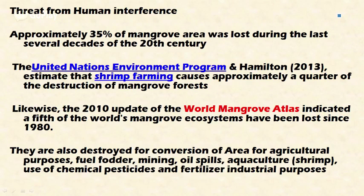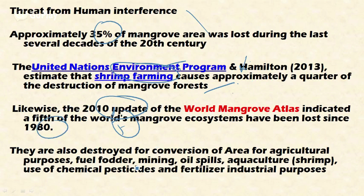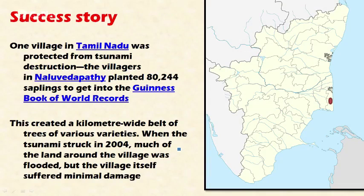Despite these important functions, mangroves have been under threat from human interference. Approximately 35 percent of the mangrove area was lost during the last several decades of the 20th century. A recent UNEP report estimates that shrimp farming — artificial shrimp farming — causes approximately 25 percent destruction of the mangrove ecosystem. The 2010 update of the World Mangrove Atlas indicates that one-fifth of the world's mangrove ecosystem has been lost since 1980. Mangroves are also destroyed for conversion of area for agriculture, fuel, fodder, mining activities, oil spills, aquaculture, shrimp culture, use of chemical pesticides, fertilizers, and other industrial purposes.